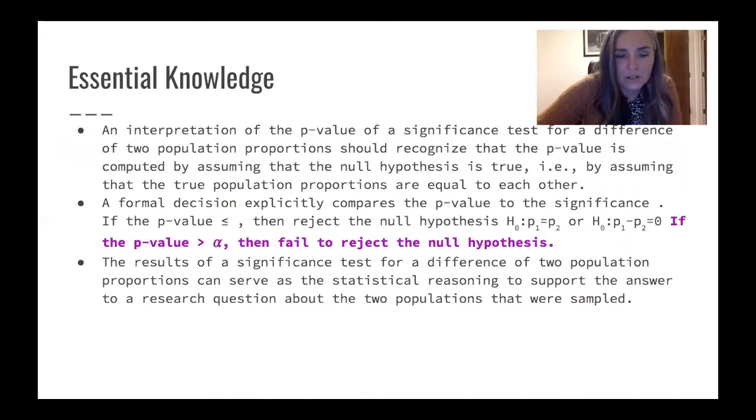So we're interpreting that P value. A formal decision explicitly compares the P value to the significance. So if the P value is less than alpha, my alpha disappeared here, then reject the null.